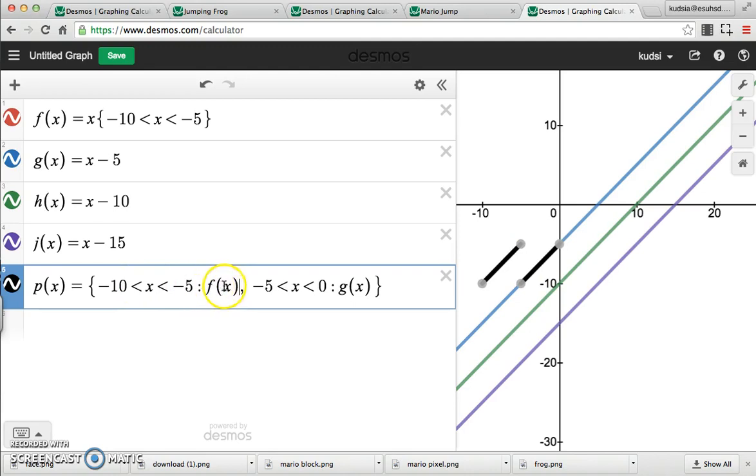For this domain, follow the first function. For this domain, follow the g function. Comma. And then, let's go continue it from 0. We have to negative 5 to 0. So, let's go from 0 to 5. And we'll follow the colon space, h of x was next.